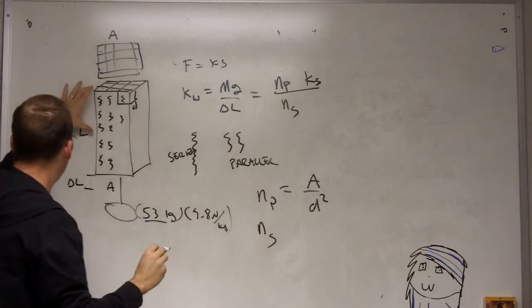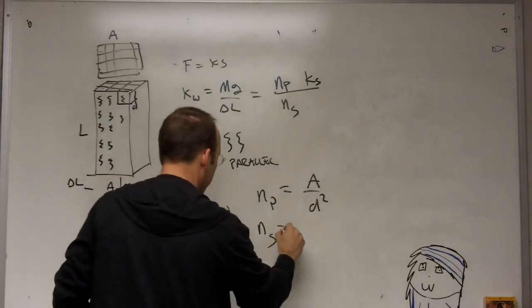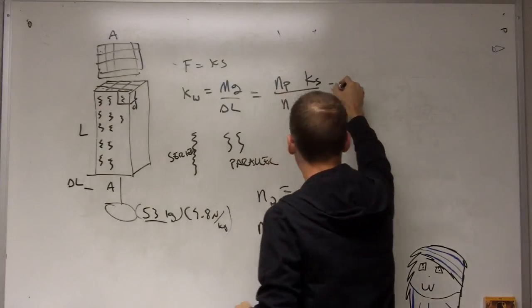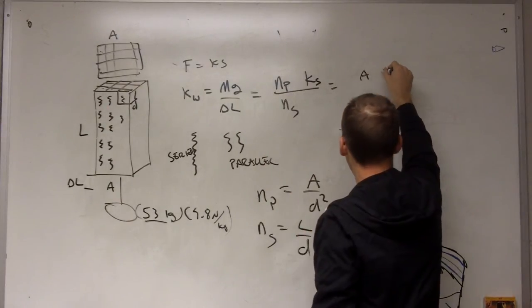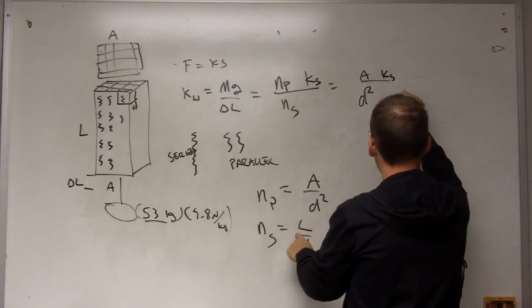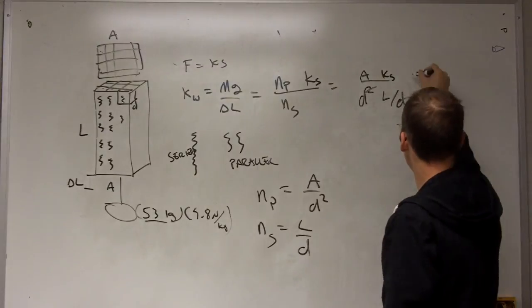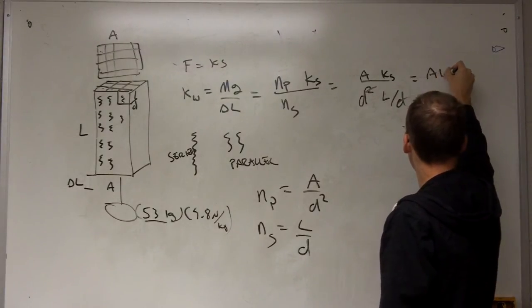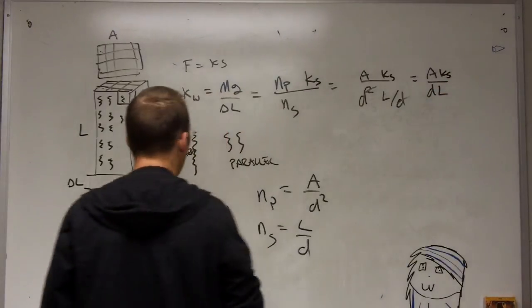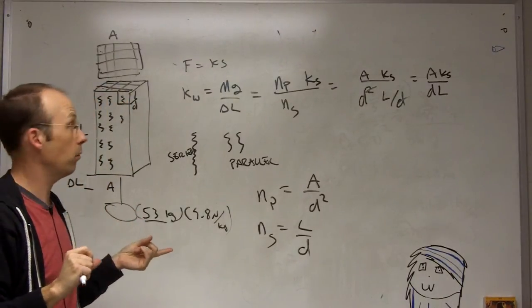And then what about in series? Again, if I know the length of this and I know the length of each one of these, I could find it. The number in series is going to be L divided by D. So let me put that in here. This is going to be NP is going to be AKs over D squared. NS is going to be L over D. So one of those cancels, and I get AKs over DL. So now I want to find the interatomic spring constant.